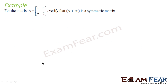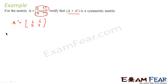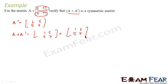We will take one example. We have to verify that A plus A dash is a symmetric matrix using a given matrix A. Let us find A dash first — converting rows to columns, A dash becomes [1, 5; 6, 7] transposed as [1, 6; 5, 7]. Now let us find A plus A dash: [1, 5; 6, 7] plus [1, 6; 5, 7] equals [2, 11; 11, 14]. To check symmetry, one shortcut is to treat the diagonal as a mirror — since 11 appears in both off-diagonal positions, it is a symmetric matrix.